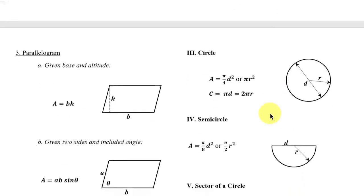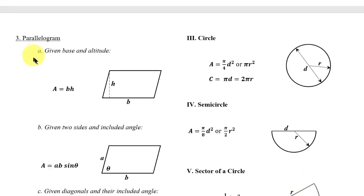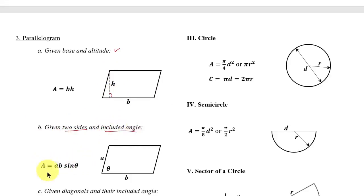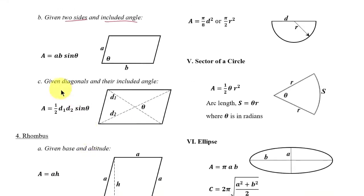Next is the parallelogram. Given the base and altitude: Area = base × height, where h is the perpendicular distance between the parallel sides. The second formula, given two sides and the included angle: Area = a × b × sin(θ). The third formula, given diagonals and their included angle: Area = ½ × d₁ × d₂ × sin(θ), where d₁ and d₂ are the diagonals.